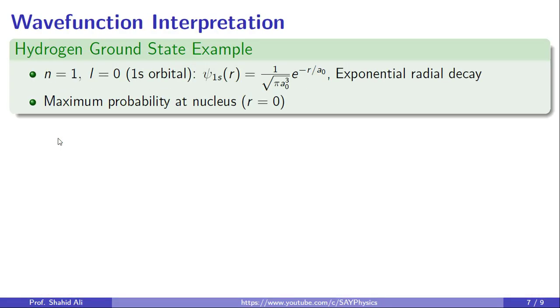To ground our discussion in something concrete, let us look at the hydrogen atom ground state. In this case, the quantum numbers are n equal to 1 and l equals zero. This corresponds to the 1s orbital, the lowest energy state available. The wave function for this state is 1s equal 1 over square root πa0 cubed times e to the power minus r over a0, where a0 is the Bohr radius. This expression describes how the probability amplitude changes with radial distance from the nucleus. In this case, it decays exponentially, which means the electron is most likely to be found close to the nucleus and the probability decreases as we move farther out.